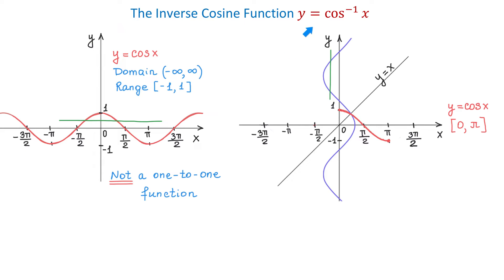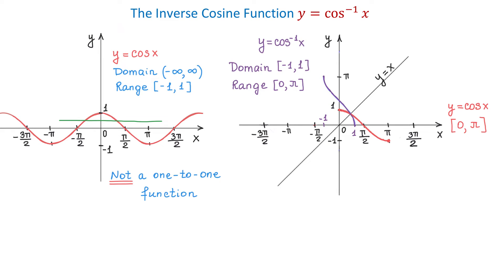This inverse is y equals inverse cosine of x. If we reflect this restricted graph about y equals x, the graph of the inverse function will stretch from 0 to pi. Erasing everything below 0 and above pi, we have the graph of the inverse cosine function. The domain of this function is the interval from negative 1 to positive 1, and the range is the interval from 0 to pi.